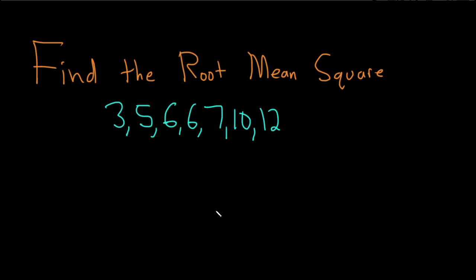In this problem, we're going to find something called the root mean square, which is often abbreviated by RMS, and this is called the quadratic mean as well. Let's go ahead and work through it.